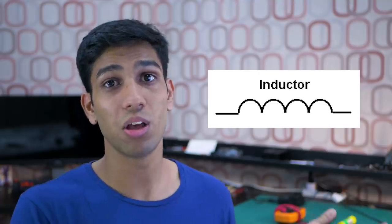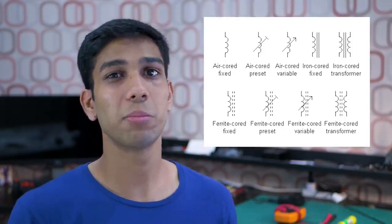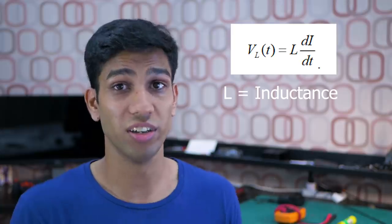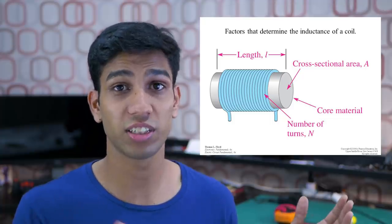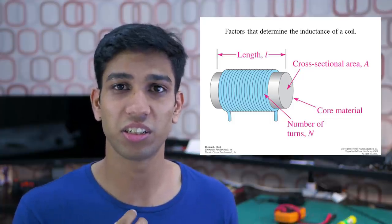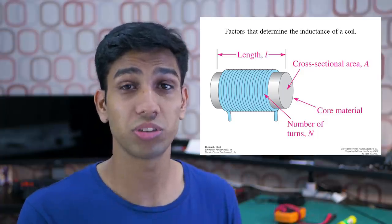Now that we understand how inductors work, let's explore the different types of inductors and how we can use them. This is the standard symbol for an inductor in a circuit diagram, and based on the type of inductor, this symbol can change slightly. Inductance is measured in a unit called the Henry, which is the rate of change of current and voltage. We can change the inductance of an inductor by tweaking factors such as the length of the inductor, the number of turns, the core material, and even the cross-sectional area of the wire used.